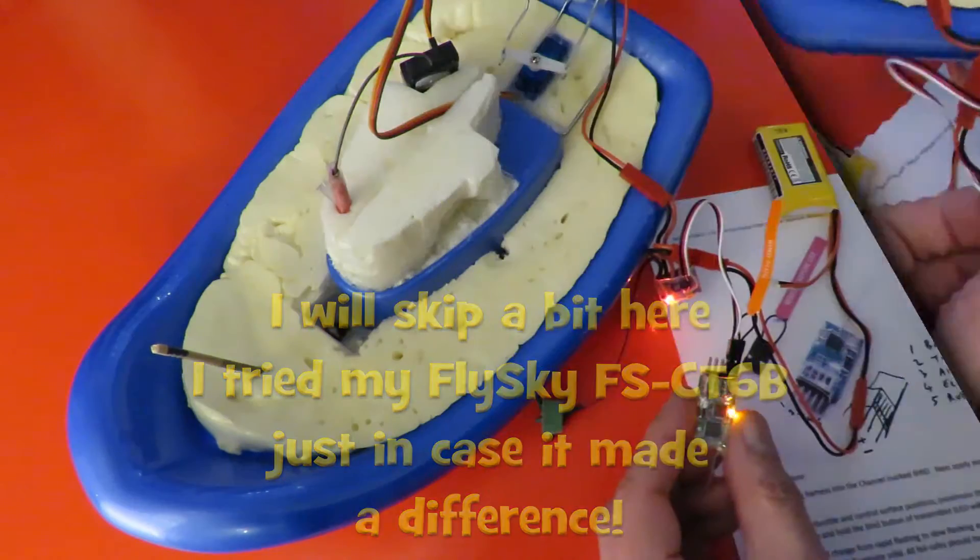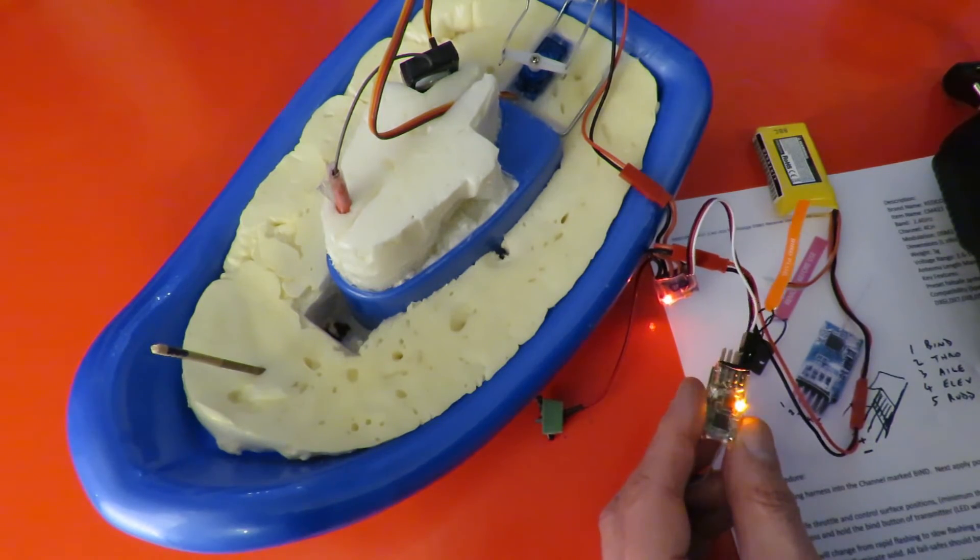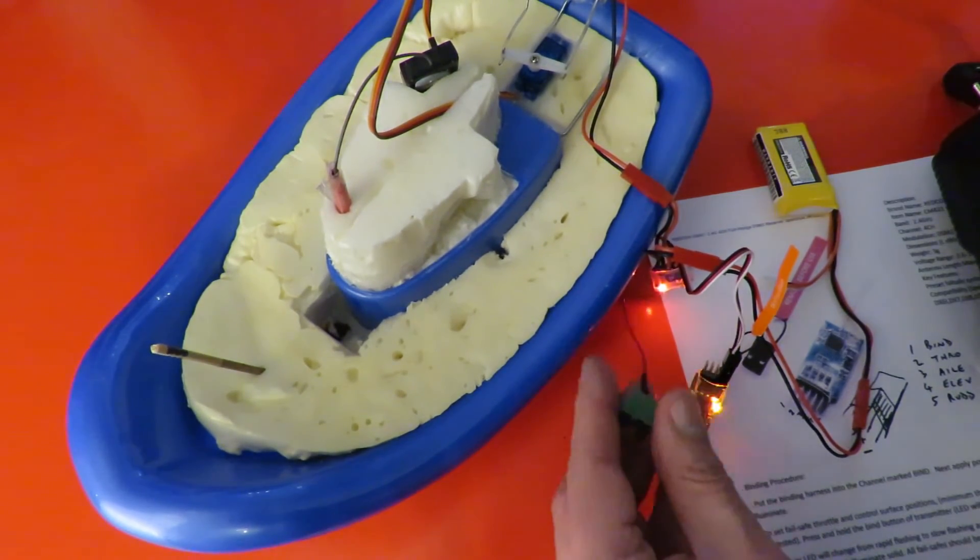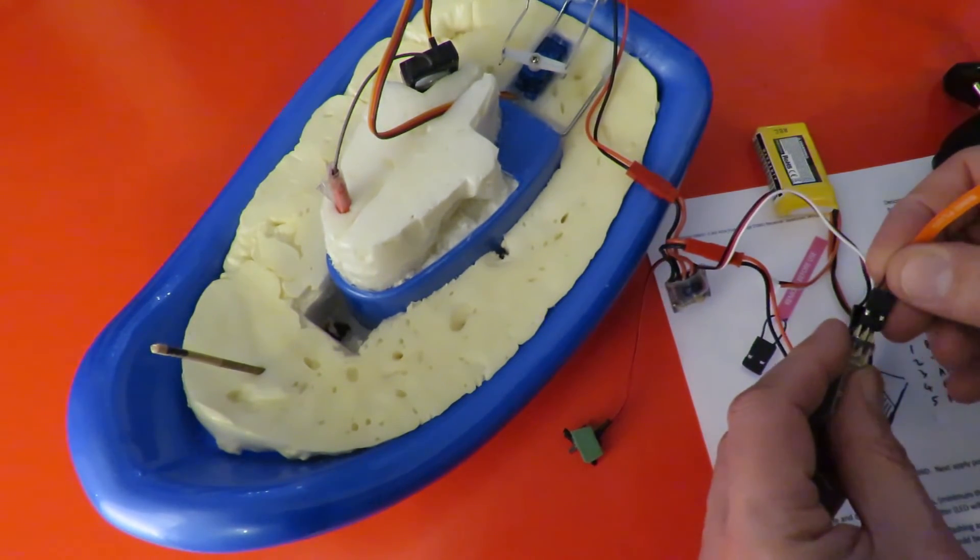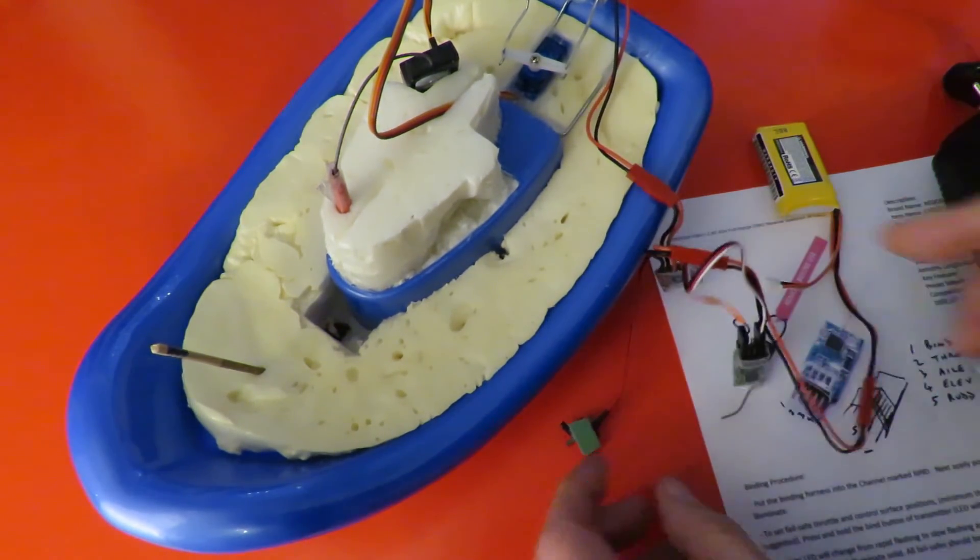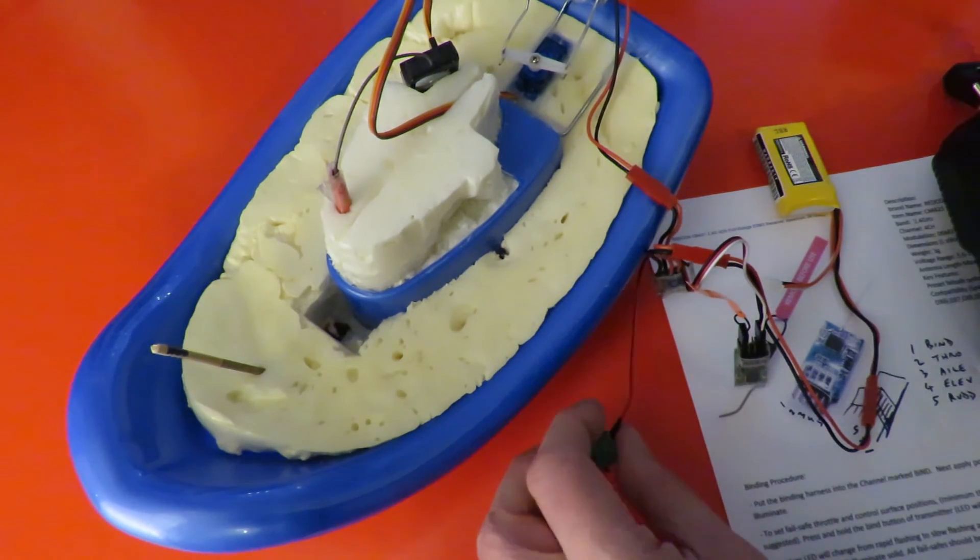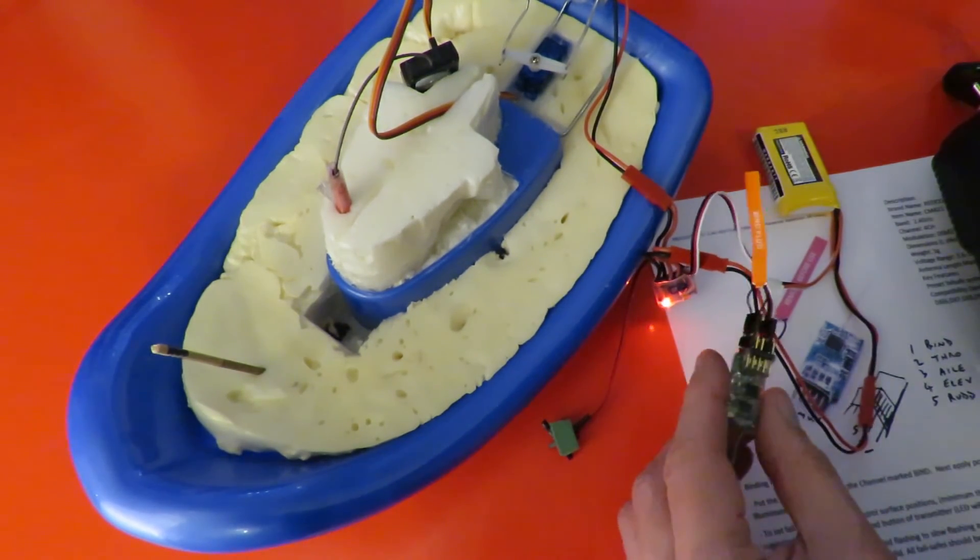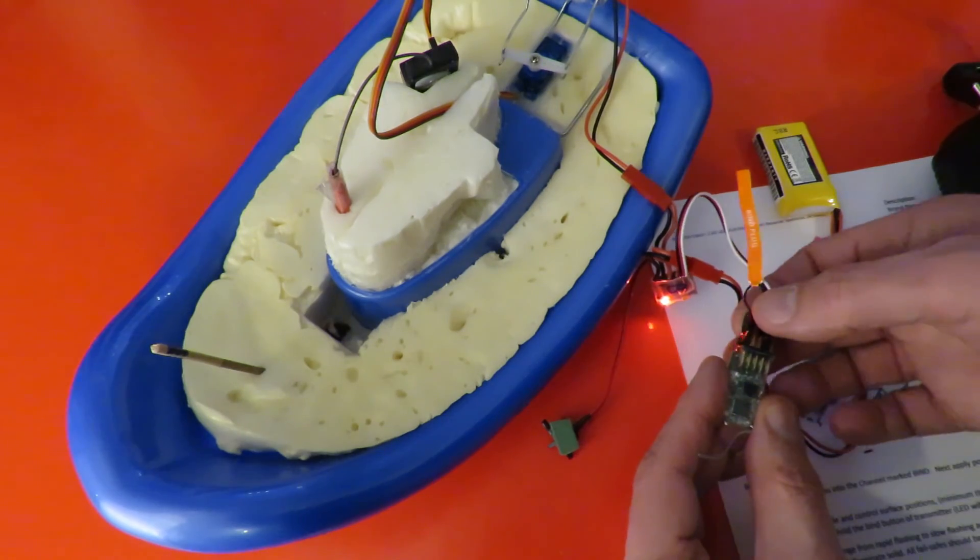Let's pull that out. I'll just try putting the bind at the opposite end just in case this one's completely wrong. Transmitter in bind mode. Well that didn't look good did it. Light just went straight out.